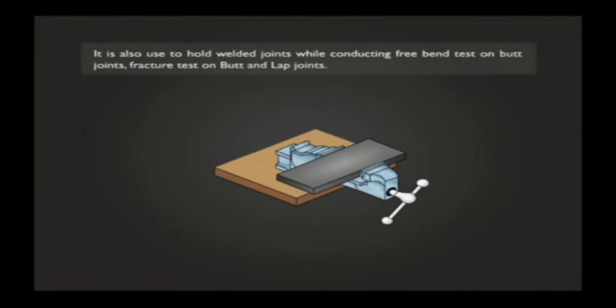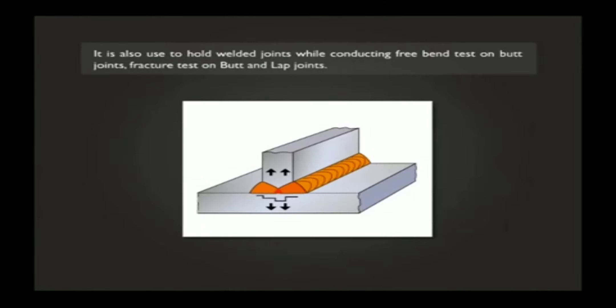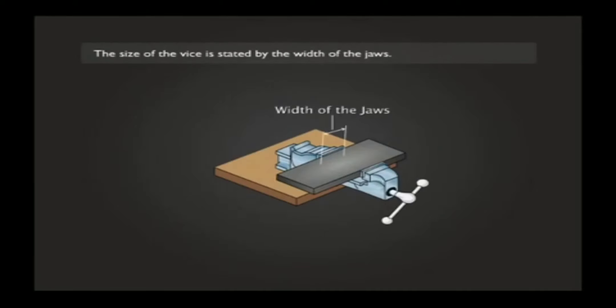It is also used to hold welded joints while conducting free bend test on butt joints, fracture test on butt and lap joints. The size of the vise is stated by the width of the jaws.